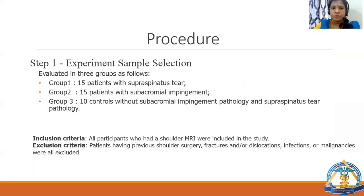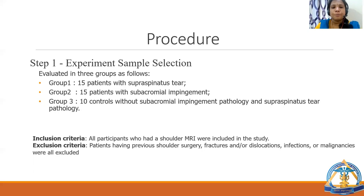In the procedure, step 1 was sample selection, evaluated in 3 groups: Group 1 consisted of 15 patients with supraspinatus tear, Group 2 consisted of 15 patients with subacromial impingement, and Group 3 consisted of 10 controls without subacromial impingement or supraspinatus pathology. All participants who had a shoulder MRI were included. Patients with previous shoulder surgery, fractures, dislocations, infections, or malignancy were excluded.